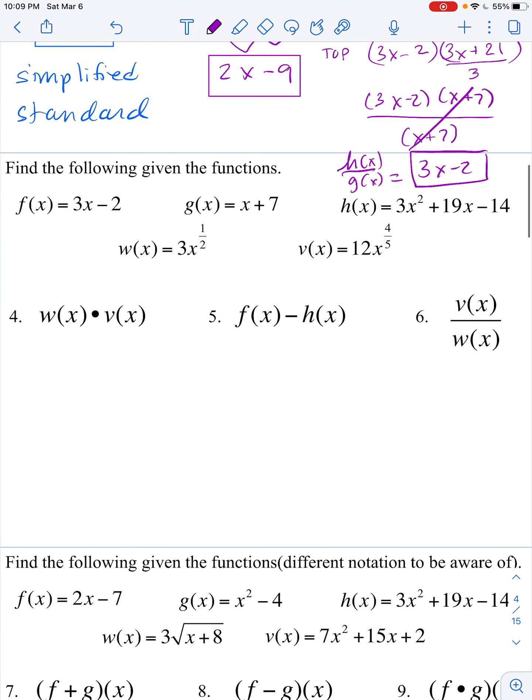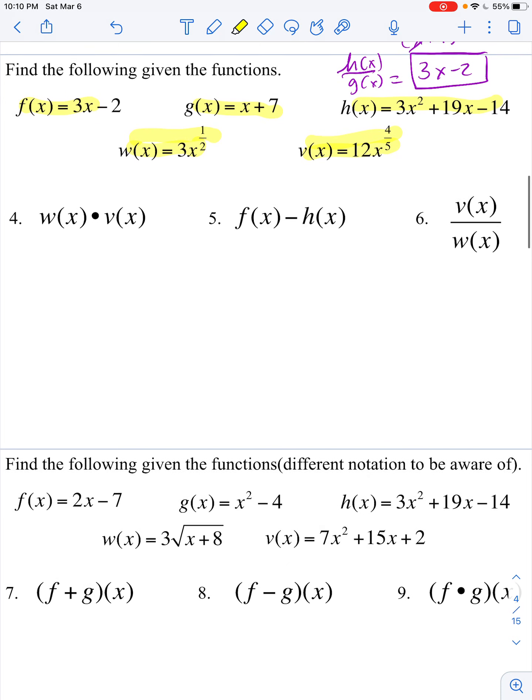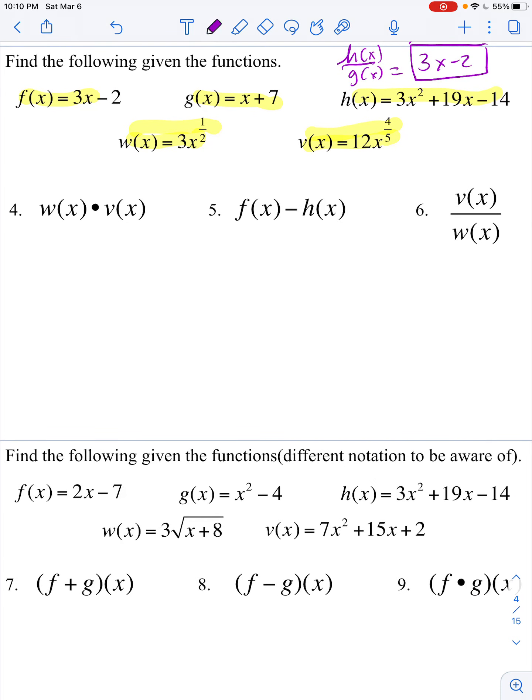These are the same exact ones we had on the previous notes up above, but it's just so I can still see them. This says to take w of x, which is 3x to the one half and multiply it by v of x. So that's this. Now this is not new math. The notation is new, but the math is what we did before.